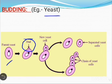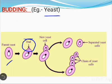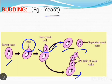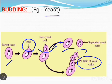The bud grows in size and then gets detached from the parent yeast, and two cells are formed from a single cell. These new cells then grow and produce more cells. Sometimes a chain of buds is formed, which leads to the production of a large number of yeasts together. So this is budding.